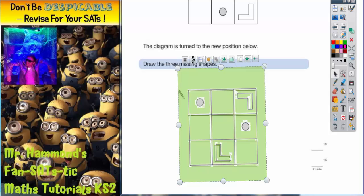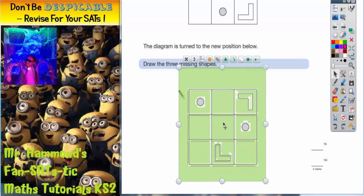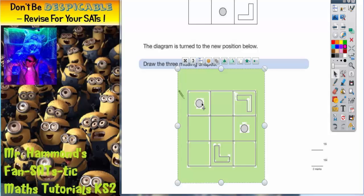We can see where the missing shapes need to be. So the circle needs to go there, the other circle needs to go there, and the other L or R shape needs to go there.